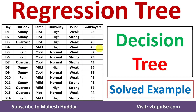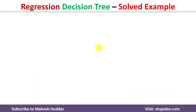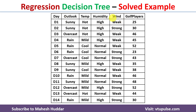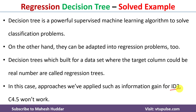Welcome back. In this video I will discuss how to build a regression tree for a given dataset with the help of a simple solved example. Decision tree is a powerful supervised machine learning algorithm to solve classification problems. When the given dataset has discrete possibilities, we can apply the decision tree. But in this case, we have a dataset with four attributes where the target attribute has real numbers, so we cannot apply basic decision tree algorithms like ID3 and C4.5. We need to build something known as regression trees.